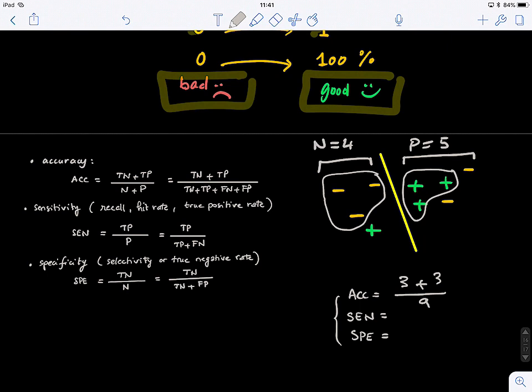Then sensitivity is the true positive. So true positive, we have three points, divided by the positive, that's divided by five.